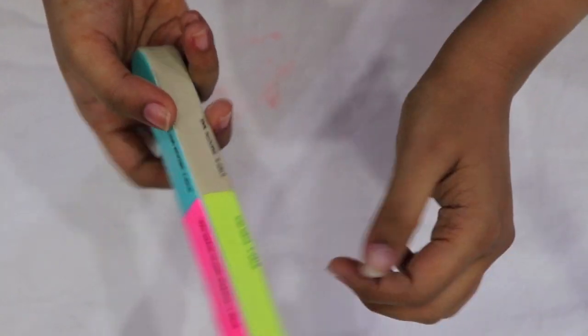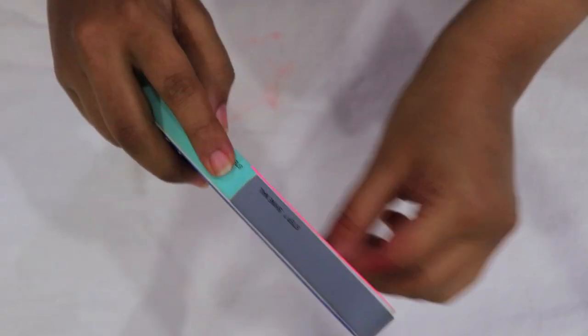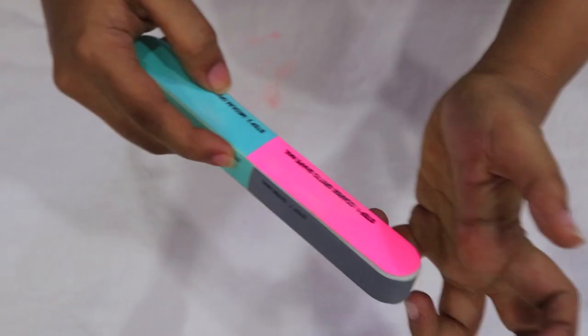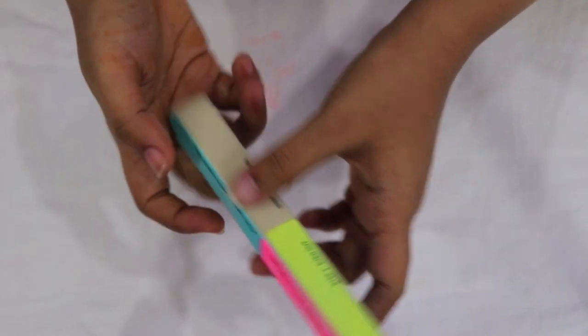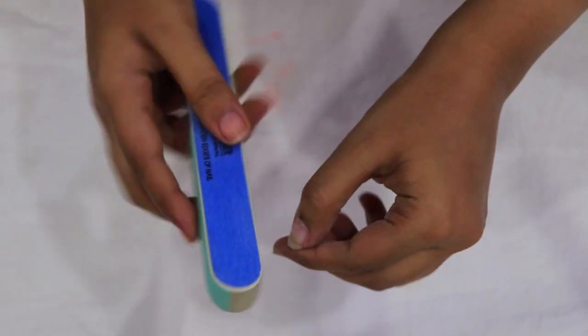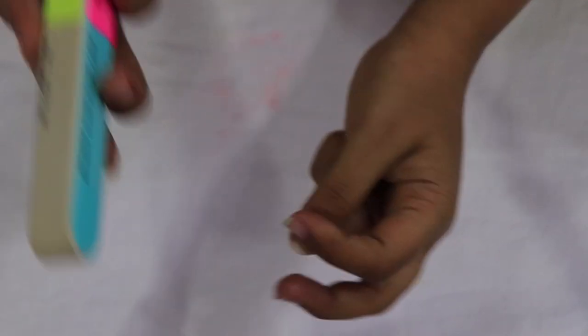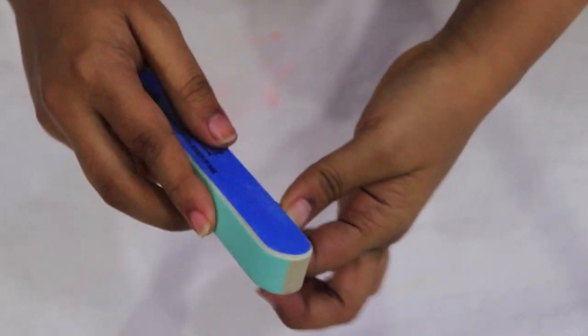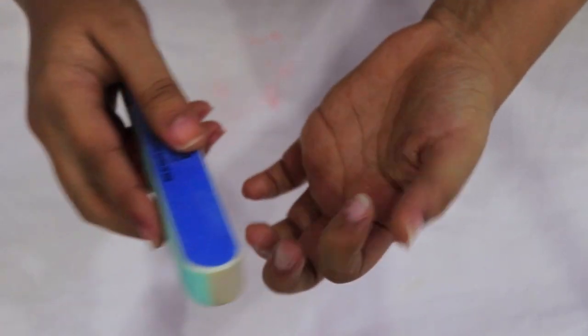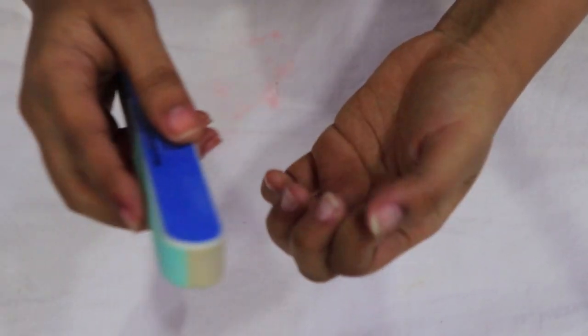Step four is even out. Step five is smooth nails. See, gradually all the white particles are coming out while we are following the steps. So you don't need to worry, what you have to do is just follow the steps.